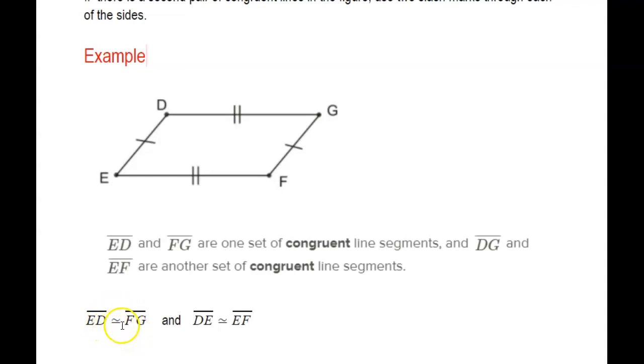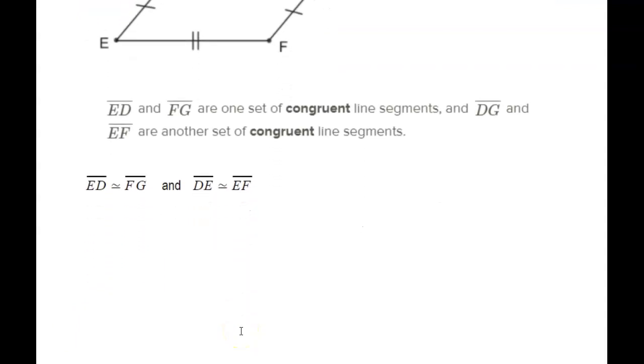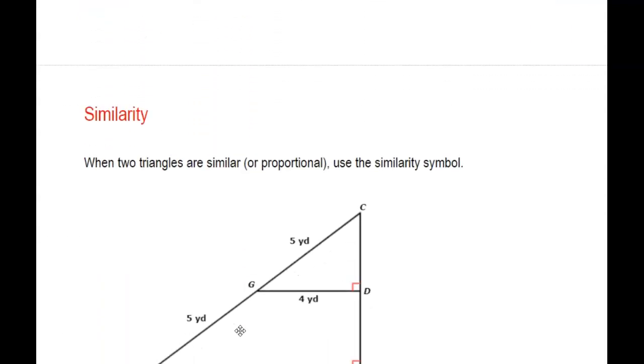ED is congruent, and this is the symbol you use for congruent. There's actually two ways to do this. Sometimes you will see a total equal sign, a complete equal sign with the squiggle on the top. Sometimes you'll see a single line with a squiggle on the top. They both mean the same thing and they mean congruent.